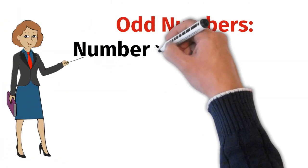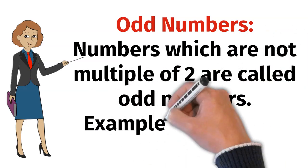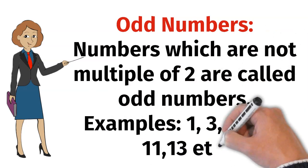What are odd numbers? Numbers which are not multiples of 2 are called odd numbers. Example: 1, 3, 5, 7, 9, 11, 13, etc.